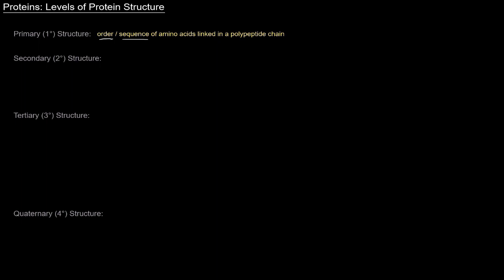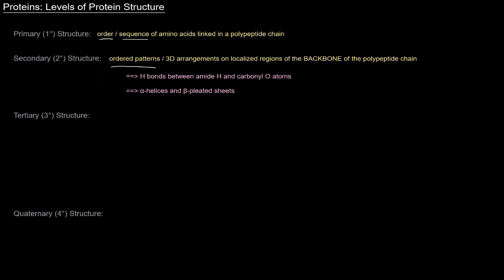Secondary structure. Secondary structure refers to the ordered patterns or 3D arrangements on localized regions of the backbone of the polypeptide chain.